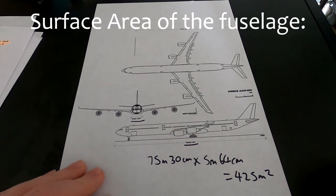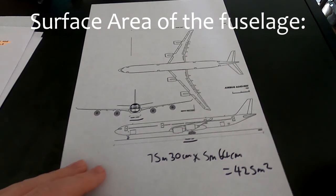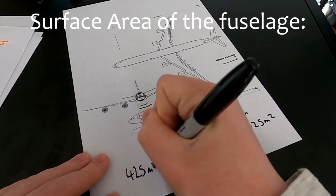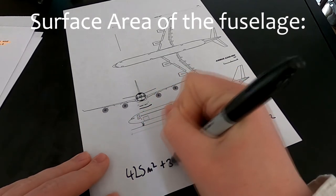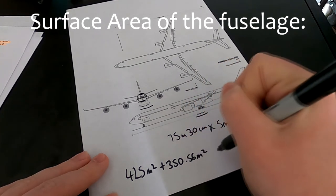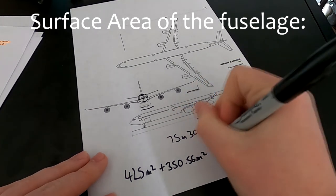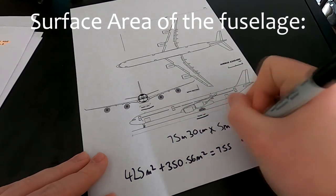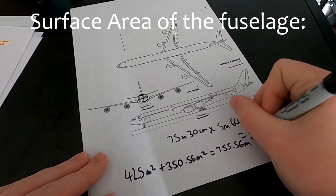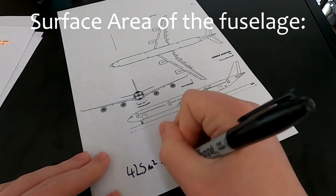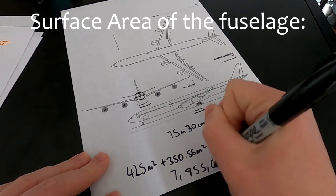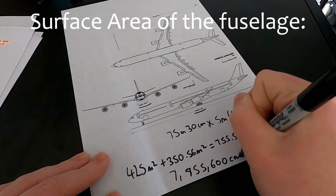So, that means that the total surface area for the underside of the plane is 425 meters squared plus 350.56 meters squared, which gets us 755.56 meters squared, or 7,755,600 centimeters squared.